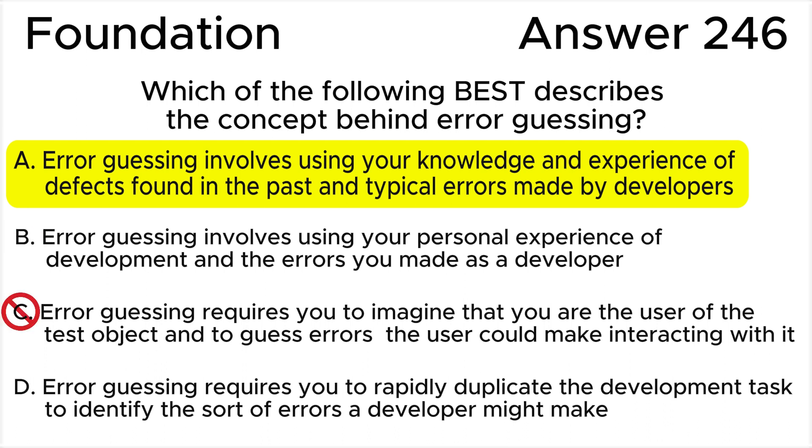Answer C is invalid. Error guessing is not a usability technique for guessing how users may fail to interact with the test object. Answer D is invalid. Duplicating the development task has several flaws that make it impractical, such as the tester having equivalent skills to the developer and the time involved to perform the development. It is not error guessing.